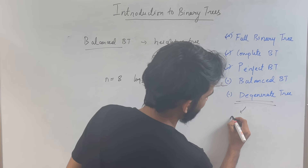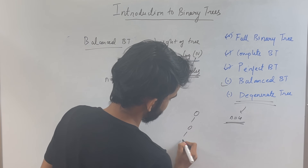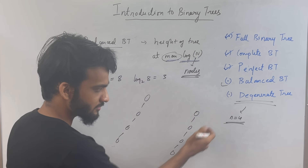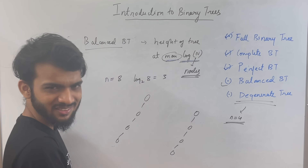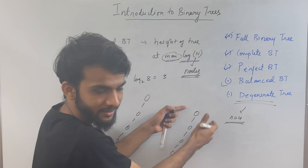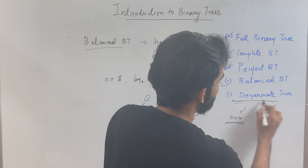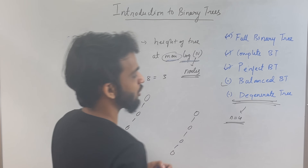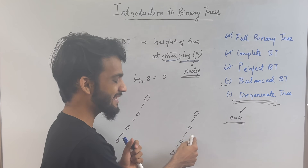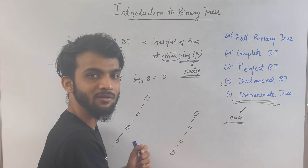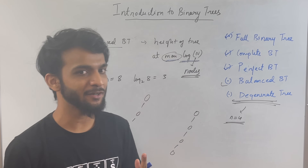The last type is the degenerate tree, also called a skew tree. For example, if n is four, a degenerate tree goes in a straight line — it is essentially a linked list. The definition of a degenerate tree is when every node has only a single child.